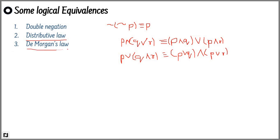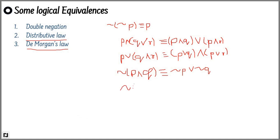The third one is De Morgan's law. It is also very useful in solving questions. In De Morgan's law, if we have given negation of (P AND Q), it is equivalent to negation of P OR negation of Q. Similarly, negation of (P OR Q) is equivalent to negation of P AND negation of Q.